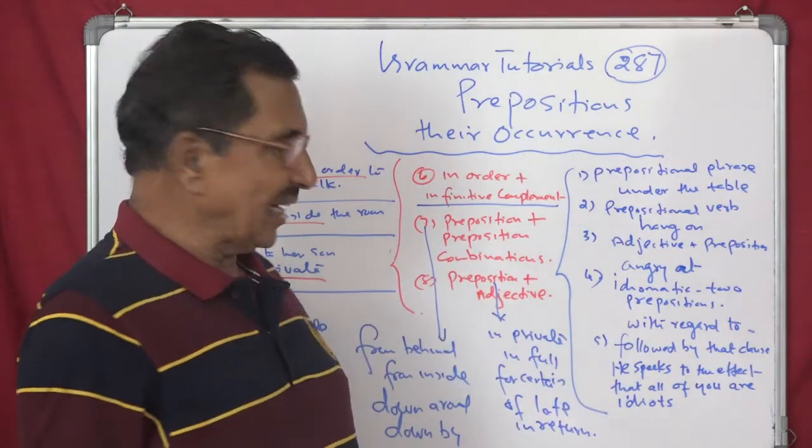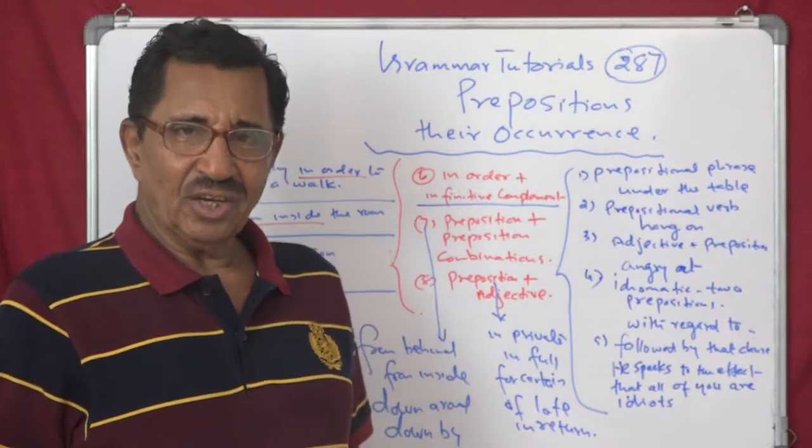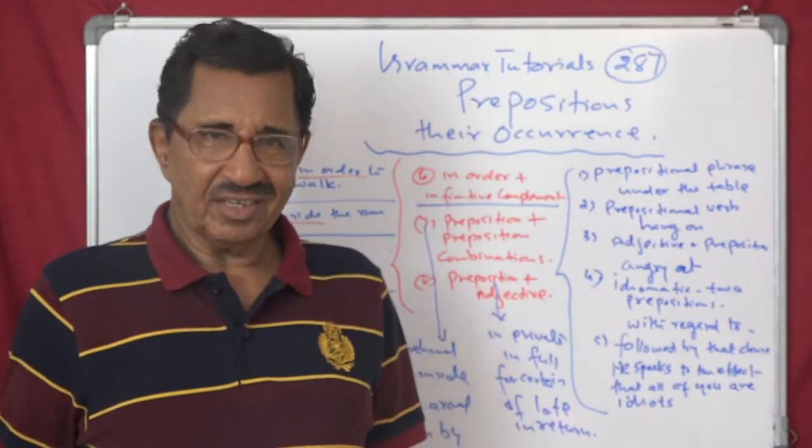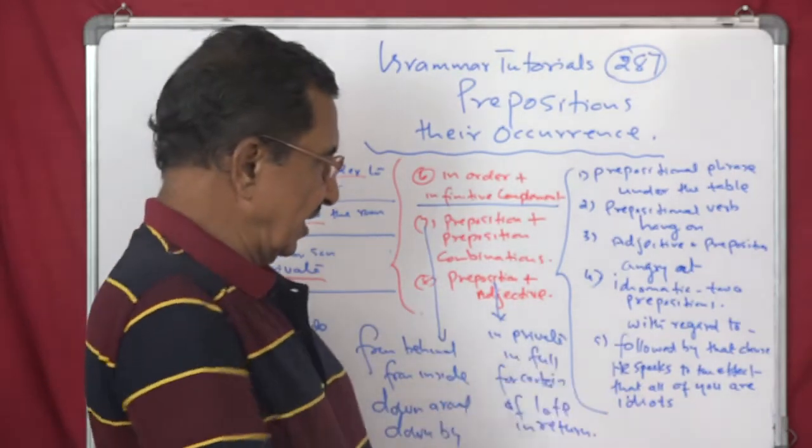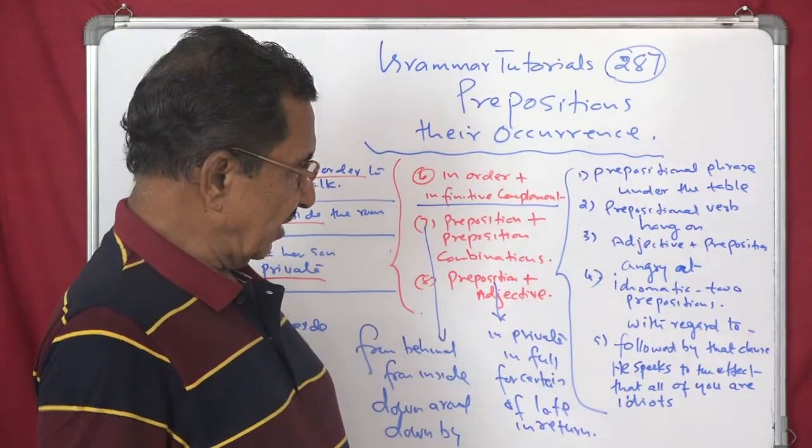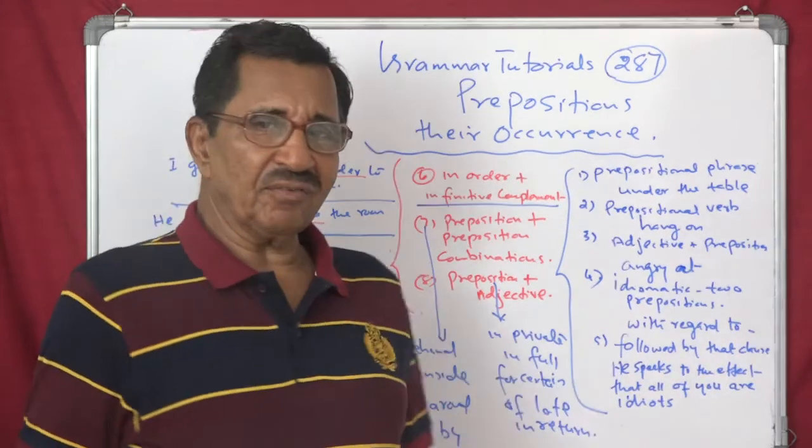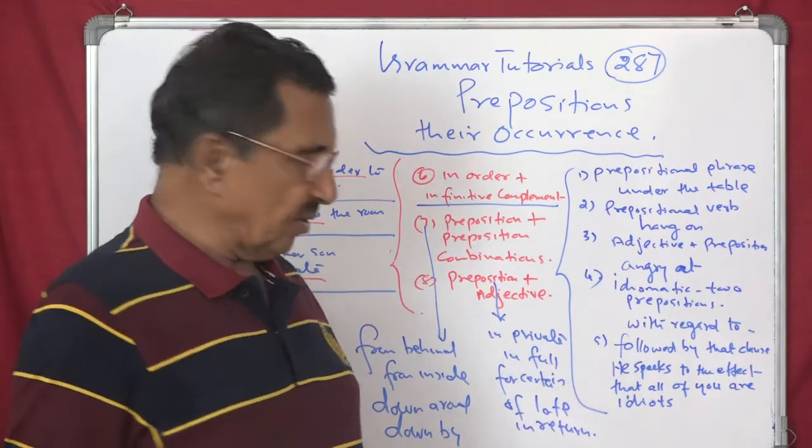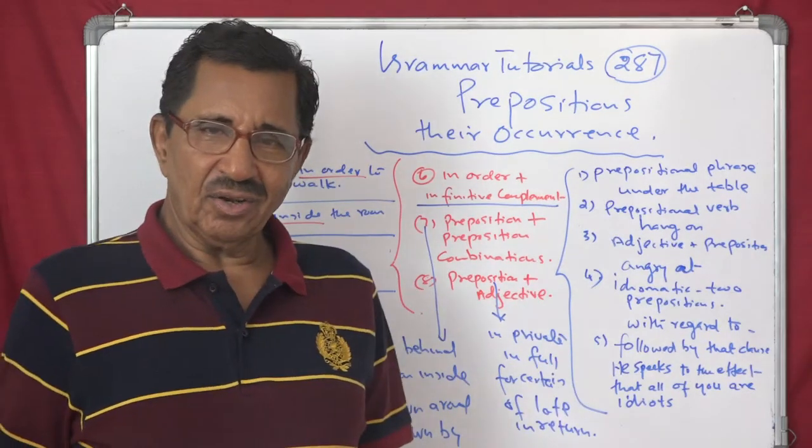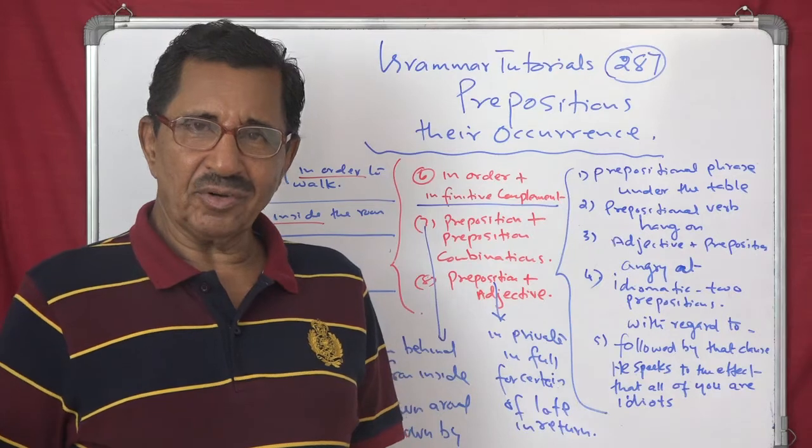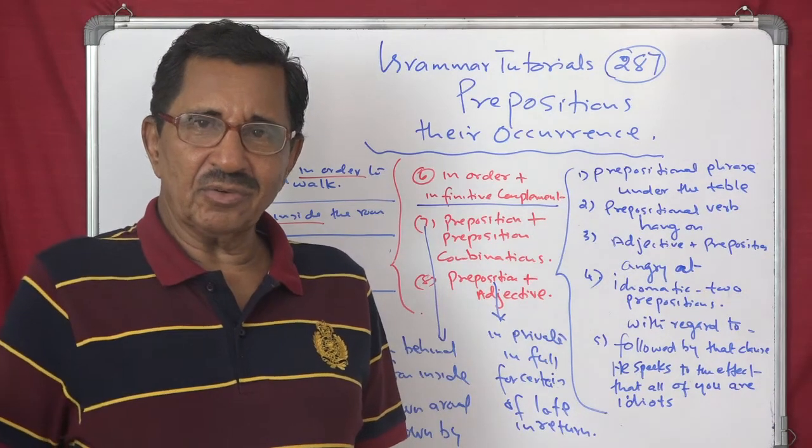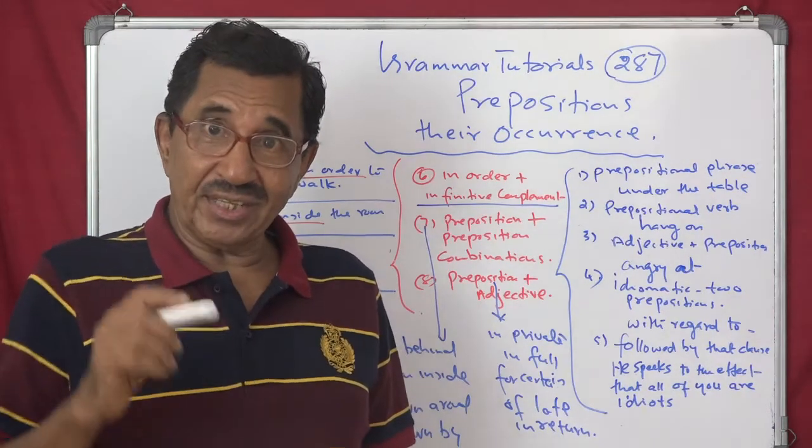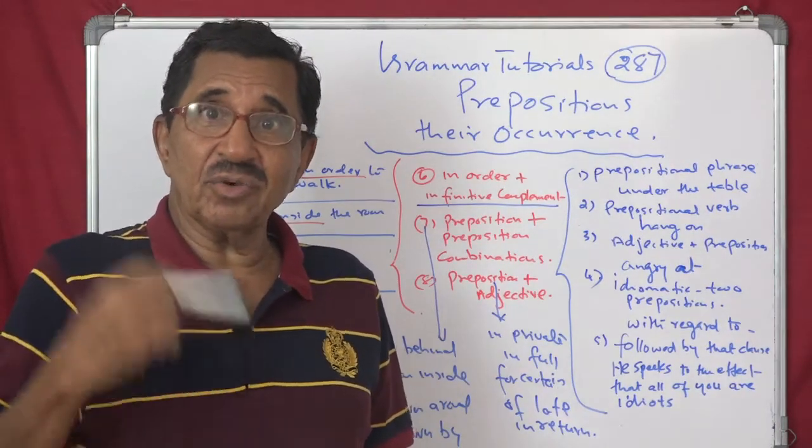With adjective plus preposition. Angriest. See. Adjective plus preposition. Angriest. Afraid of God. Then you have got with idiomatic use. Like with regard to, in view of, in case of. Followed by that clause, you are admitted on condition that you will produce your own details. You are admitted on condition, on the grounds that you misbehaved, you are dismissed. Don't believe me.